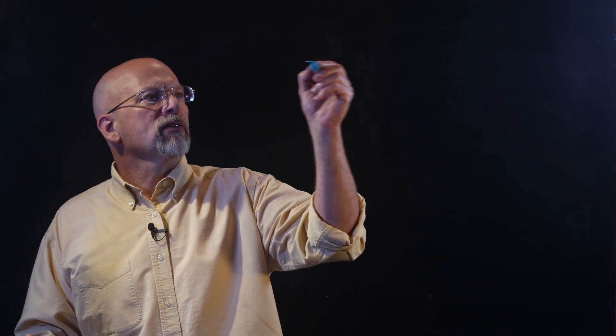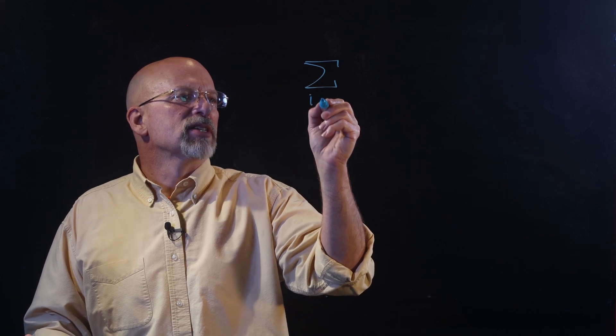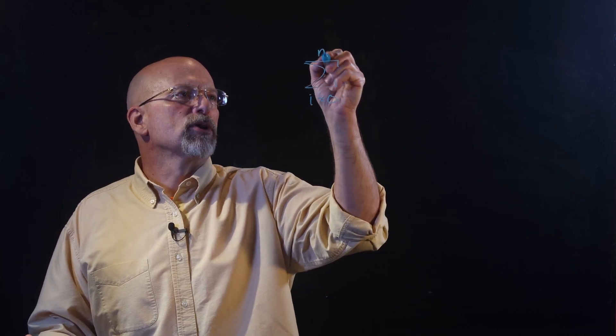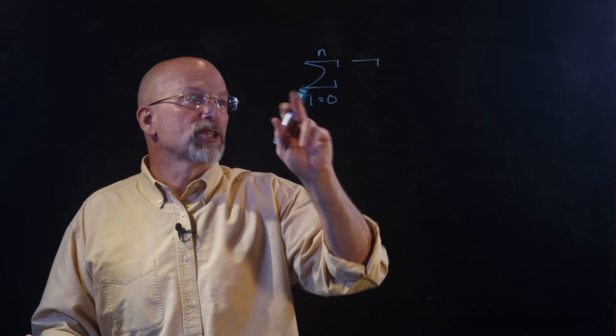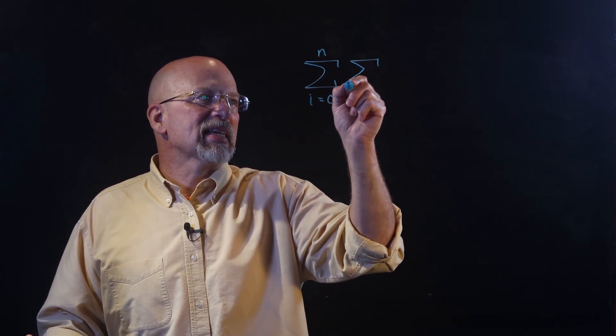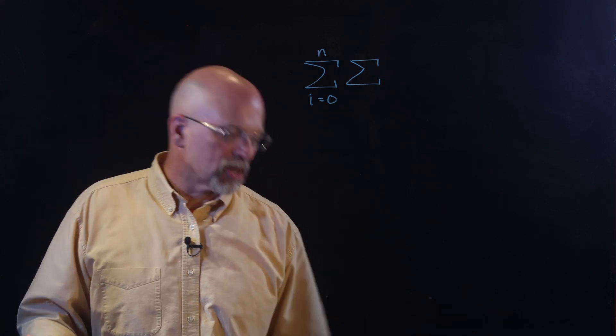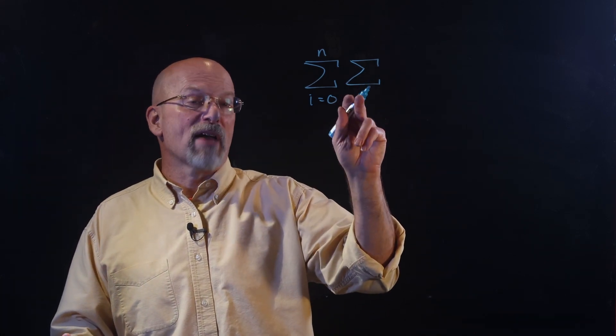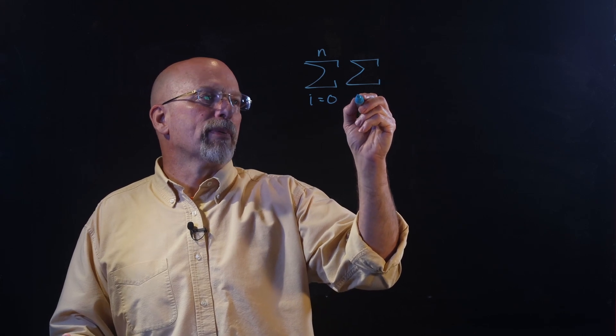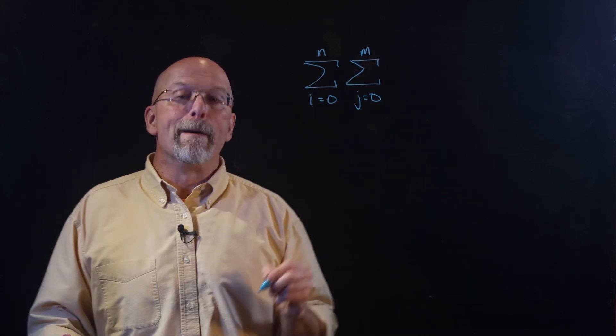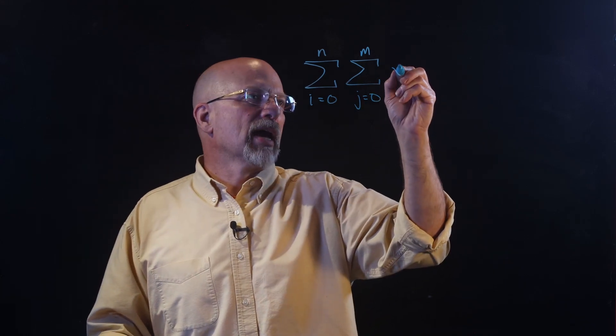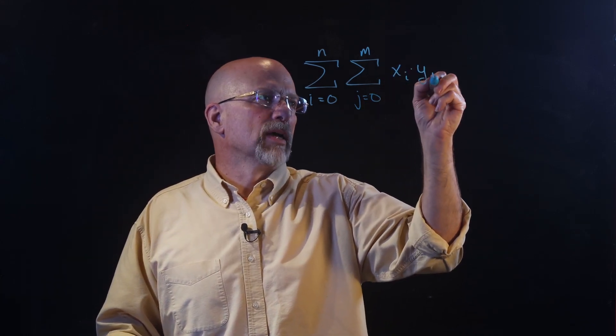It turns out you can nest summations too, but this starts to get a little bit messy. This is not quite as clean as applying the commutative, associative, and distributive laws to summations. But you could in fact have an expression like: the summation from i equals zero to n, and then inside of that, have another summation with a different identifier — say j equals zero up to m — and then maybe x sub i times y sub j.